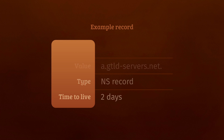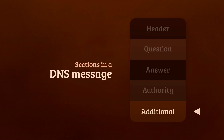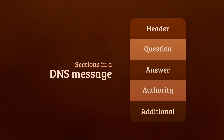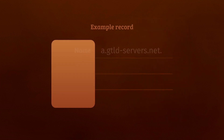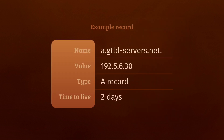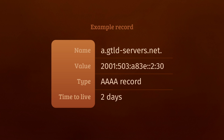DNS messages are allowed to include additional information at the end that wasn't explicitly requested. The root name server can use that section to include extra A records and AAAA records for the name servers it previously mentioned. These are, you guessed it, glue records.